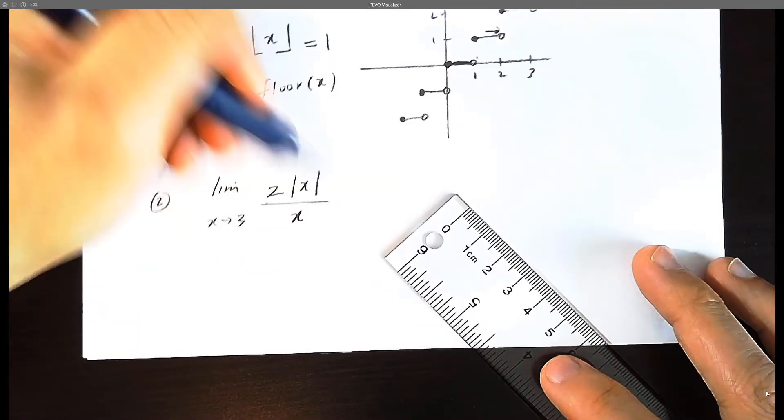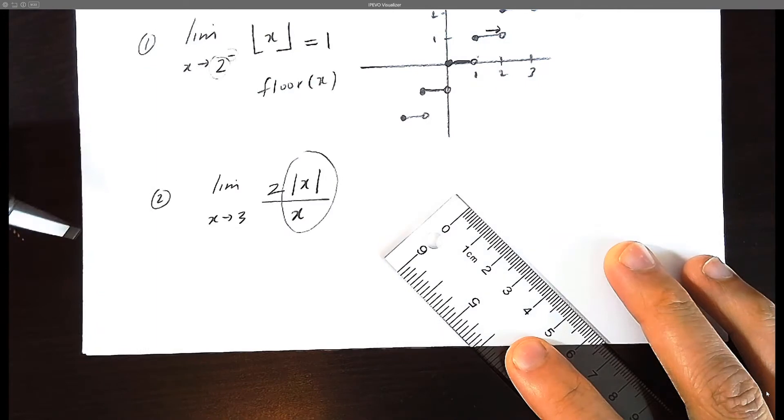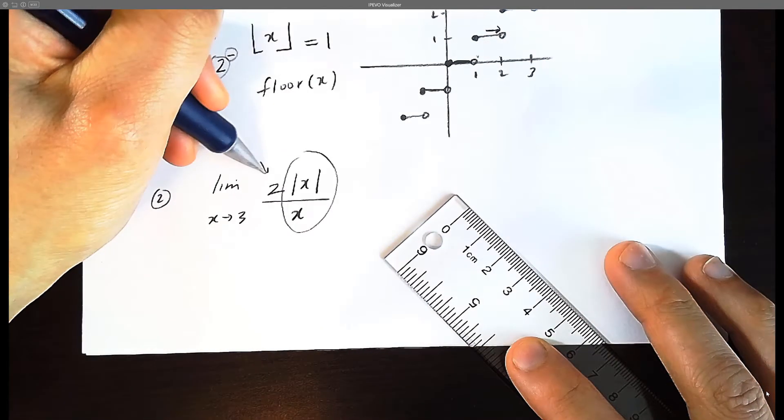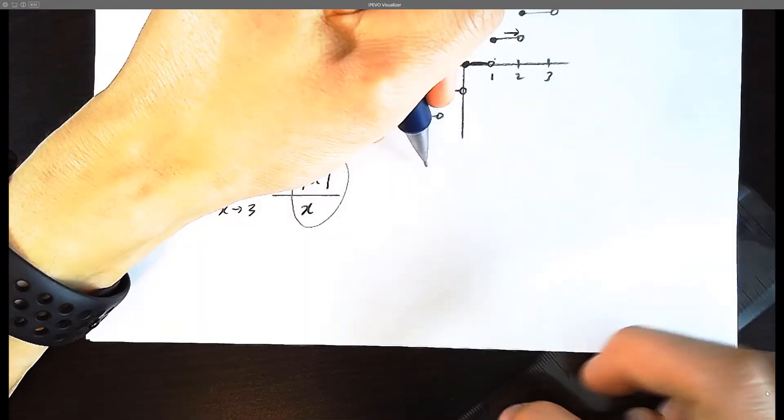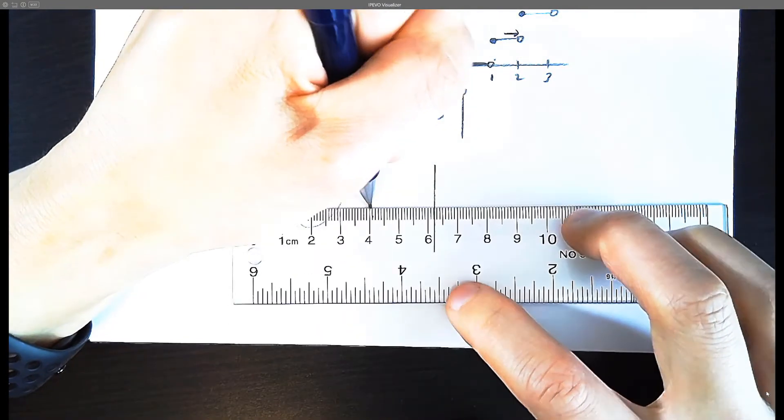Okay, so this is the second limit problem here. And what we have here is the base function, absolute value of x over x, and multiplied by two. So somehow the answer is going to be multiplied by two.